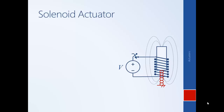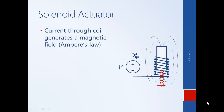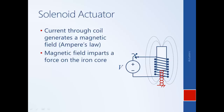One very common example of an electromagnetic actuator is the solenoid. It has a coil of wire, and the current flowing through that coil generates a magnetic field. When the switch is closed, current flows through the coil and generates a magnetic field represented by dashed lines. This magnetic field imparts a force on the iron core, causing it to move downward. When the switch is released, the current stops, the magnetic field disappears, and the iron core is returned to its original position by a spring.